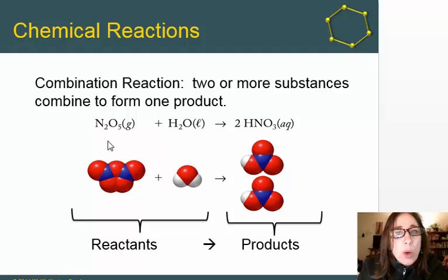Below our chemical equation, we see the space-filling models for the chemicals in this chemical reaction. If we count the number of nitrogens, which are blue, the oxygens, which are red, and the hydrogens, which are white, we see that we have equal numbers of atoms of each element on both sides of the arrow.